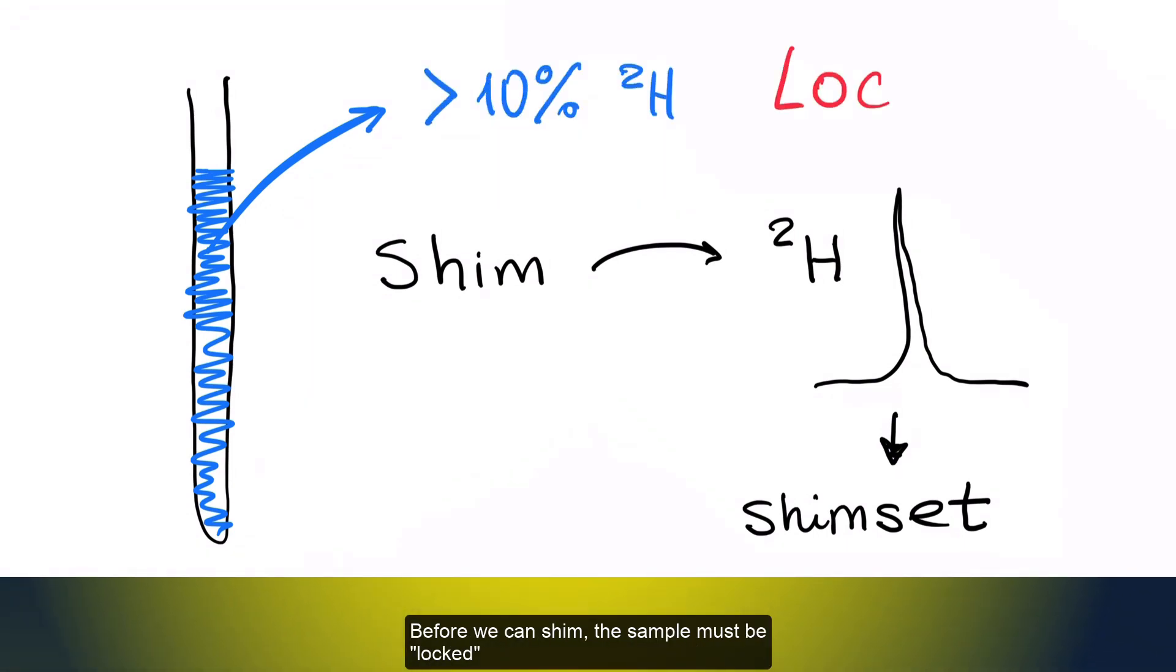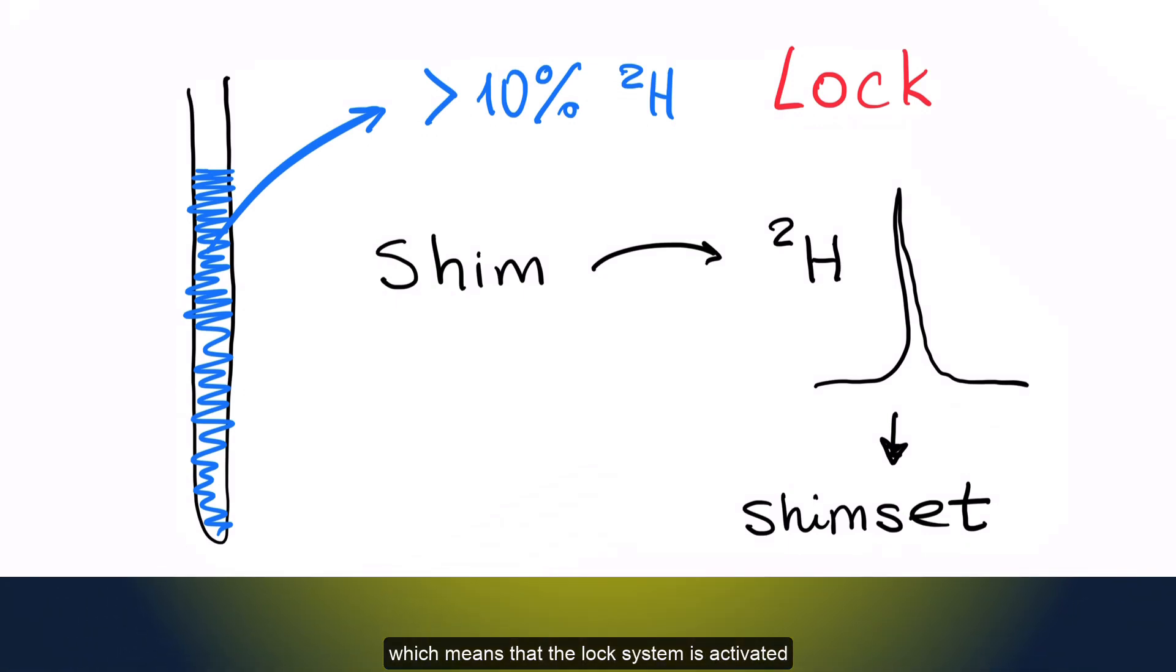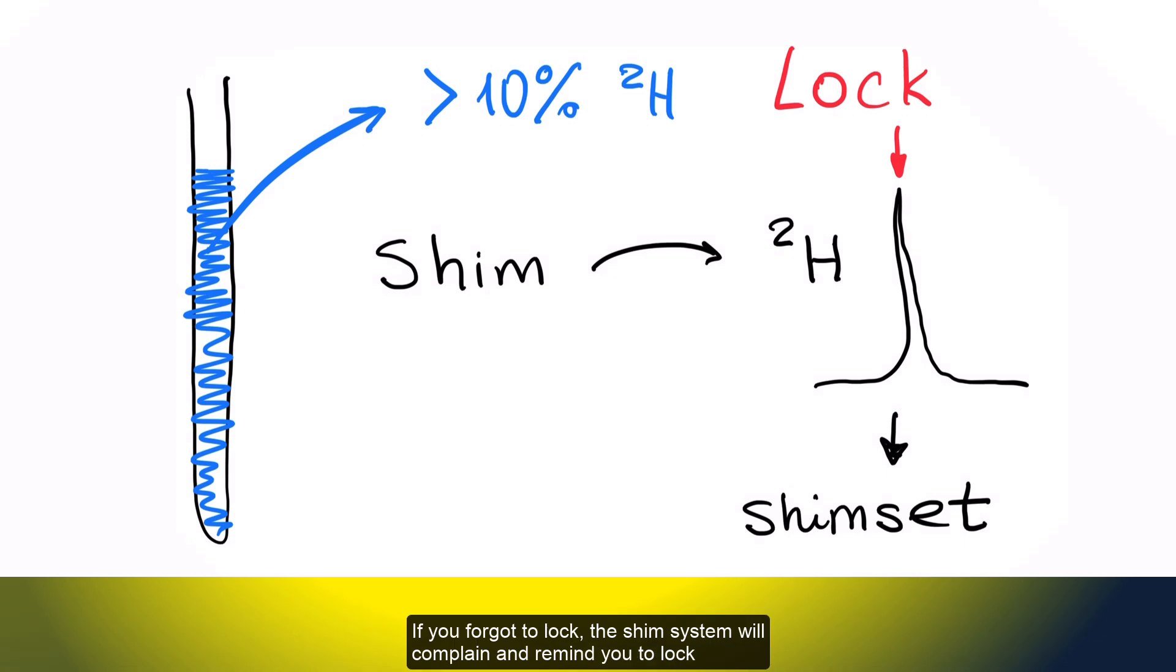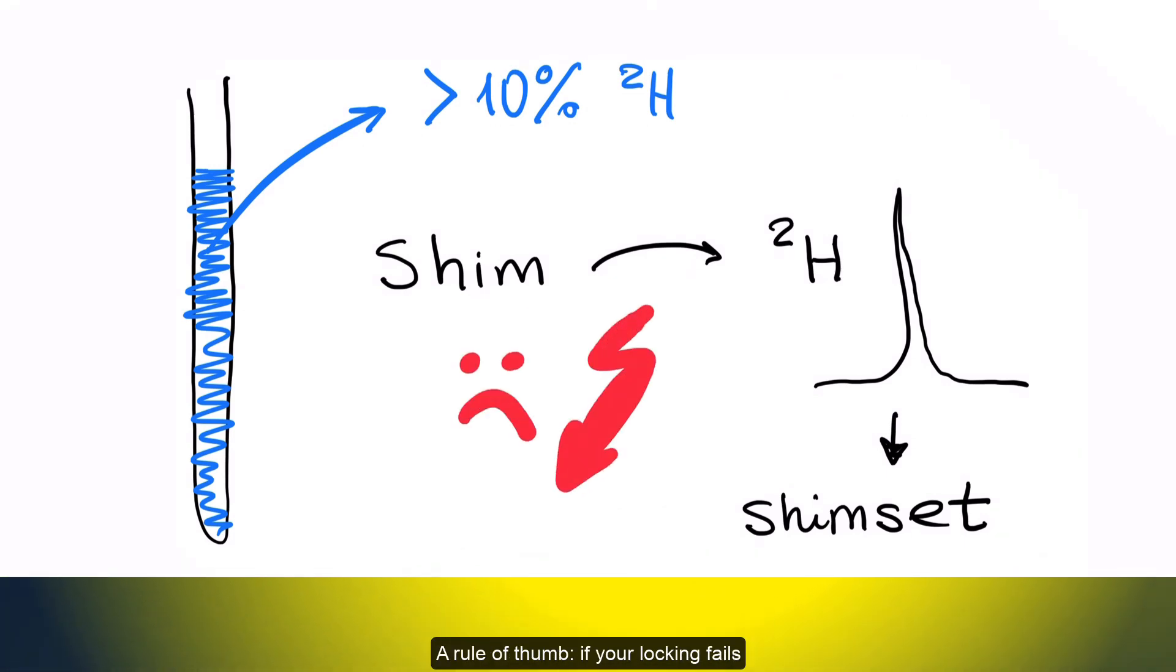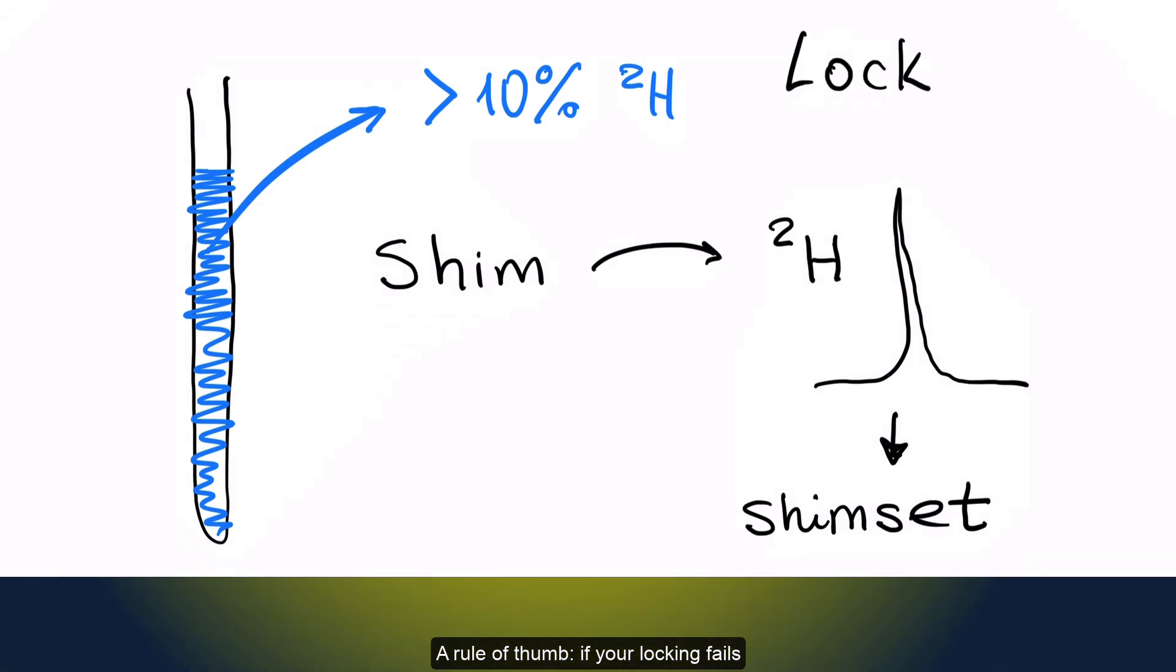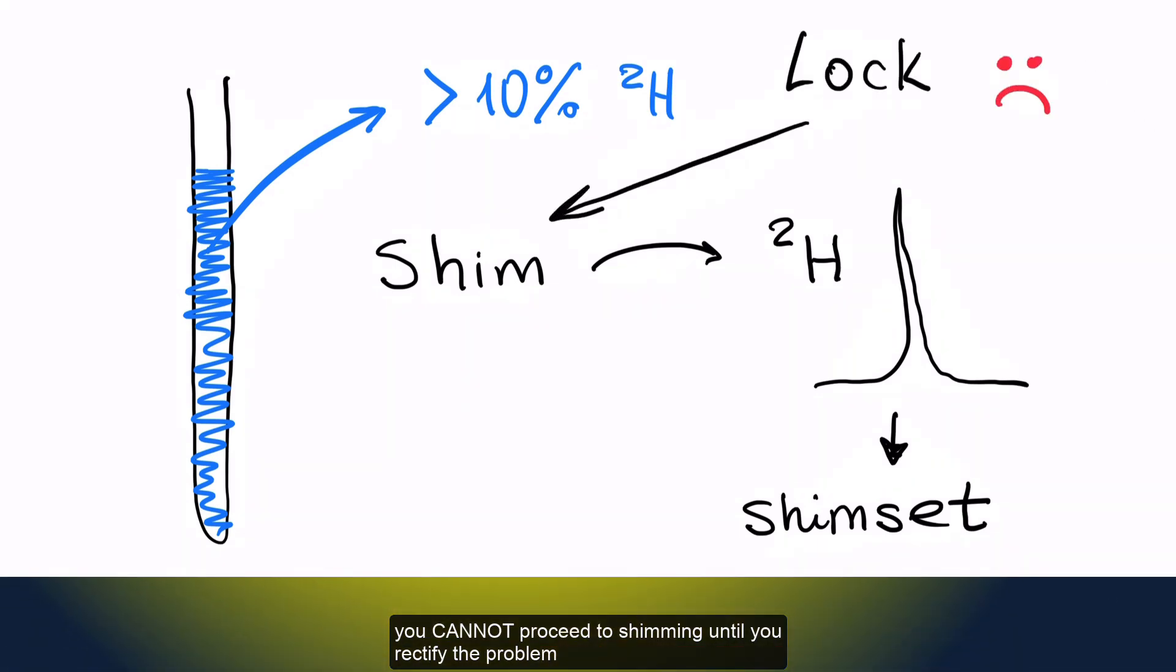Before we can shim, the sample must be locked, which means that the lock system is activated. If you forgot to lock, the shim system will complain and remind you to lock. A rule of thumb: if your locking fails, you cannot proceed to shimming until you rectify the problem.